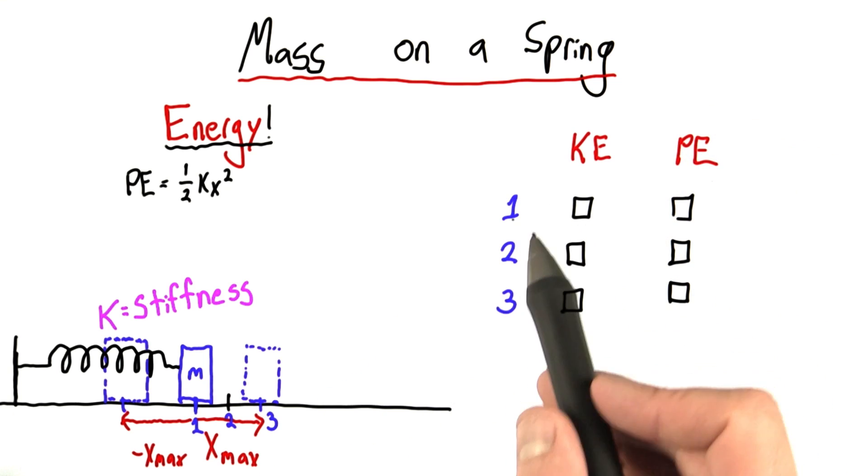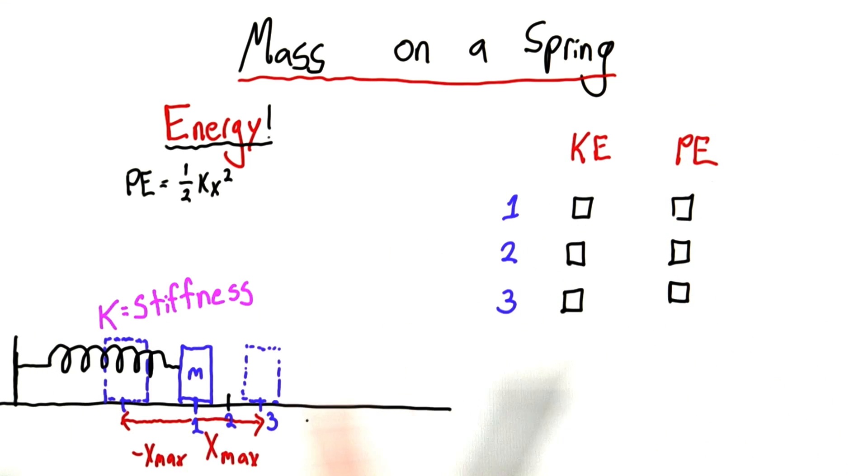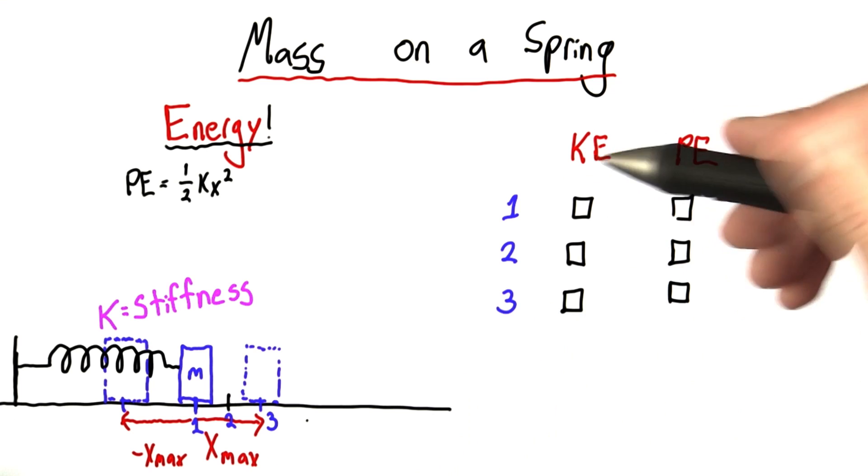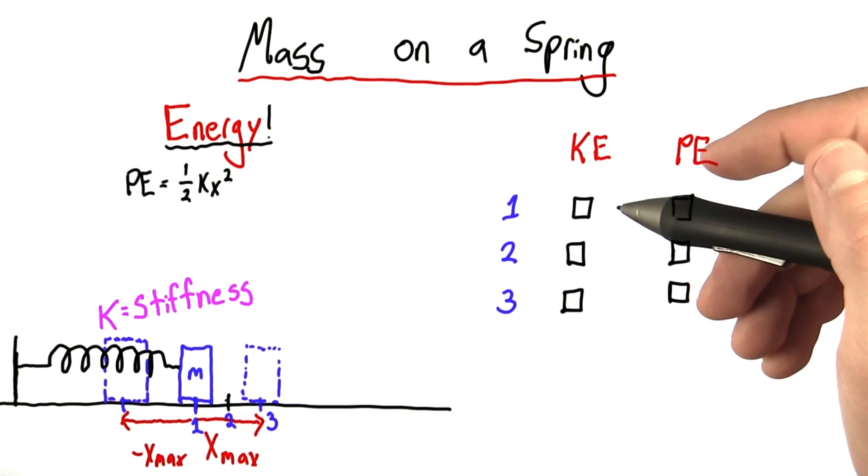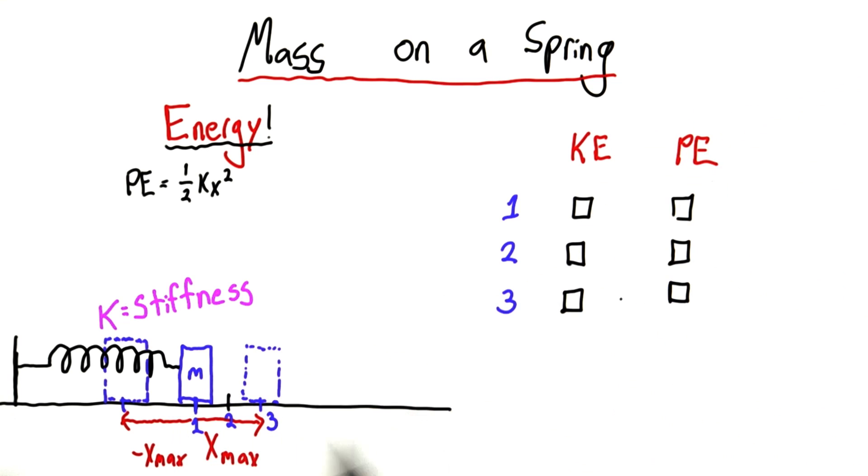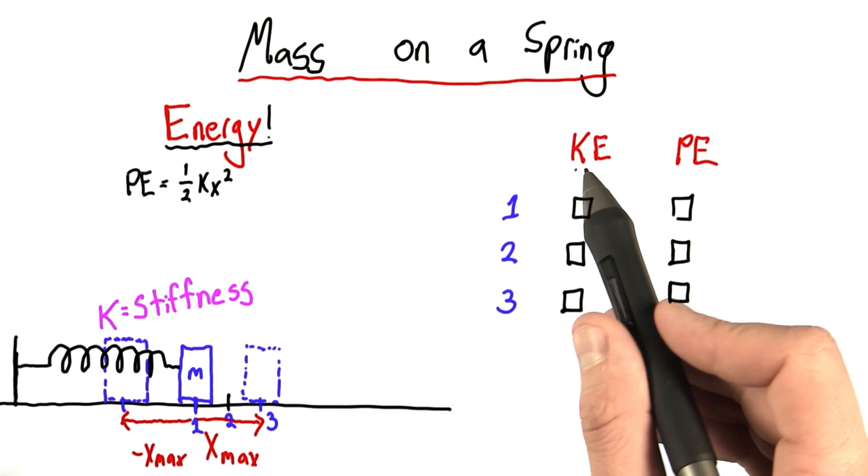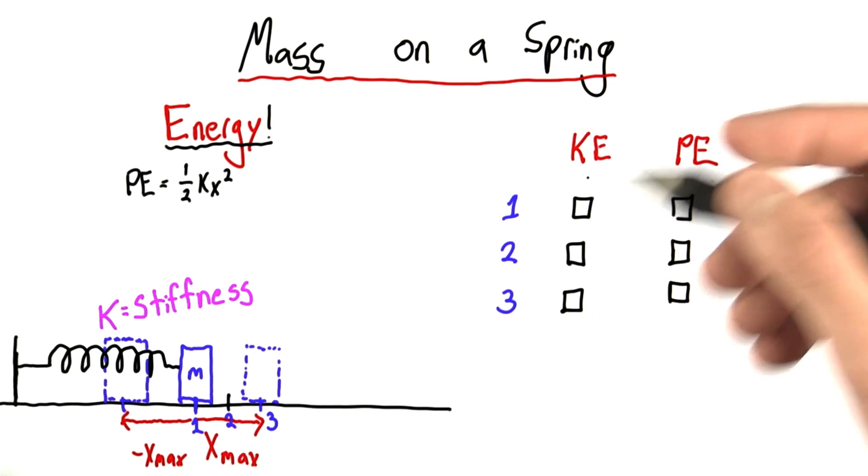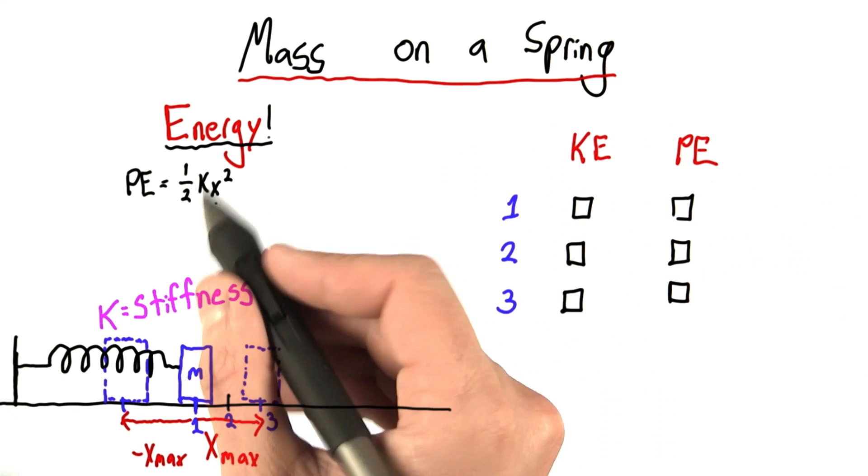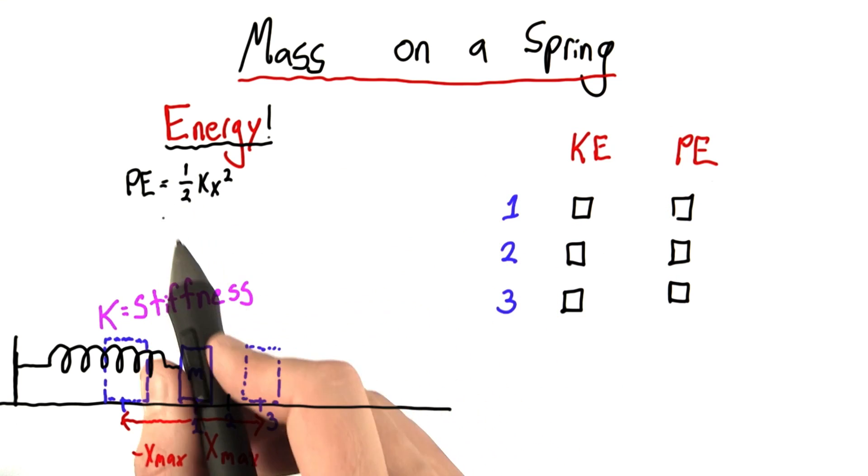So I want you to tell me, for each of these three positions, as the spring is oscillating back and forth, what kind of energy does it have at each of these positions? Check all the boxes that you think apply. And remember, we're talking about kinetic energy, the energy of motion, and potential energy, which in this case is spring potential energy, not gravitational potential.